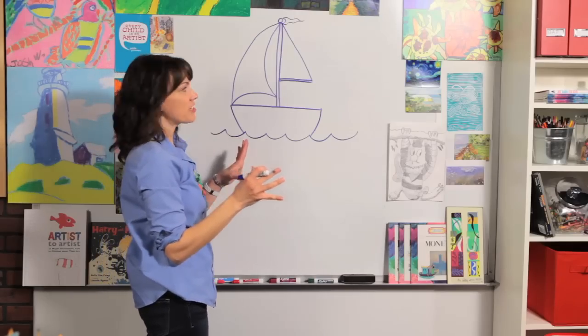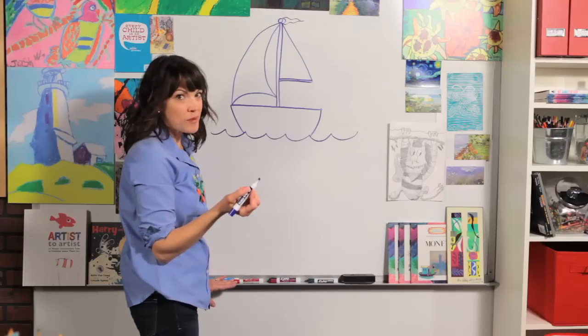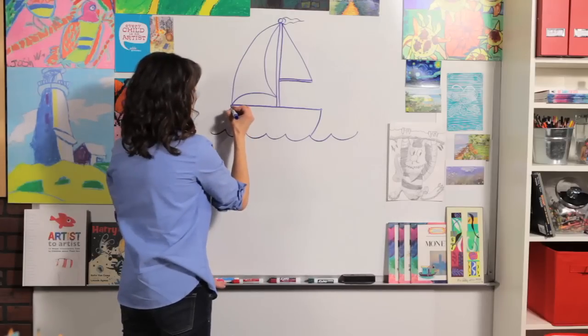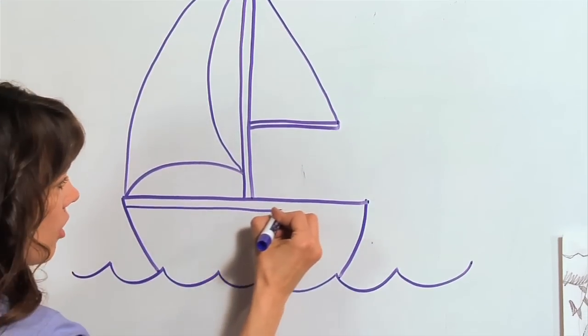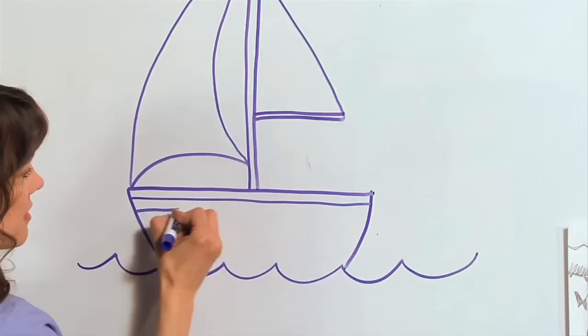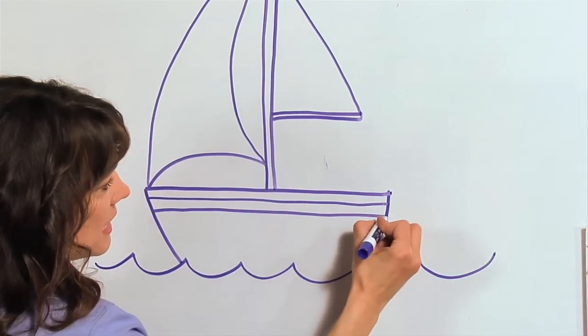Now to finish our sailboat picture, we're going to add a couple of details. Usually sailboats have a stripe. So I want you to take a straight line across and then one more right next to it, across like that.